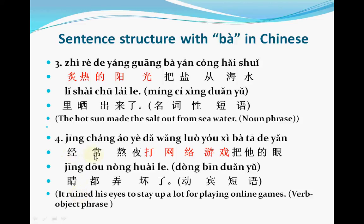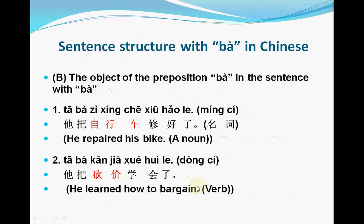经常 means often. 熬夜 means stay up. 打 means play. 网络 is online. 游戏 means games. 把 means make. 他的 means his. 眼睛 means eyes. 弄坏 means ruined. We can see in this sentence that 打网络游戏, a verb-object phrase, serves as the subject.